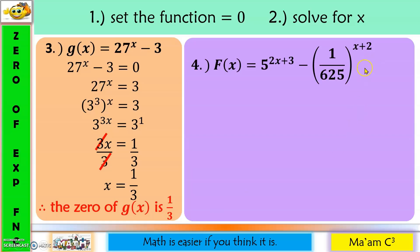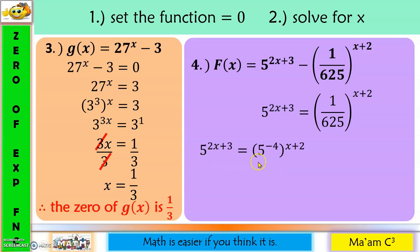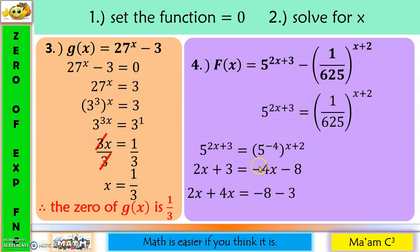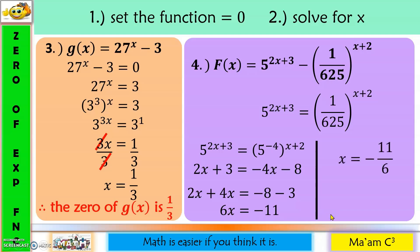Another example: move the expression to the other side. Express the base as five, since we have five raised to four. Moving the expression up gives five raised to negative four. Now with the same bases, equate the exponents: two x plus three equals negative four times x minus eight. Combining like terms: two x plus four x equals negative eight minus three, giving six x equals negative eleven. Divide both sides by six, so x equals negative eleven over six. Therefore, the zero of f of x is negative eleven over six.